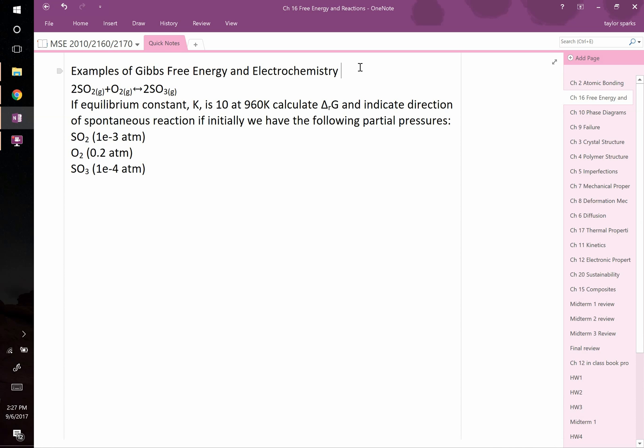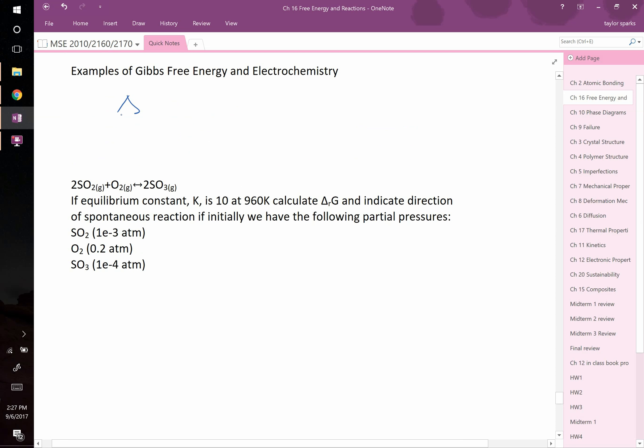For example, we know that we can write the following. We know that delta RG, or the change in Gibbs free energy for a reaction, is equal to delta RG0, the change in Gibbs free energy at standard state conditions, plus RT natural log of Q. We also know that delta V for a reaction, the voltage of a reaction, is equal to delta V0, the overall cell potential, minus RT over NF times natural log of Q, our reaction quotient. We're going to use these to solve some example questions.